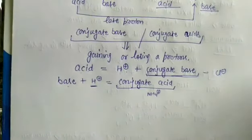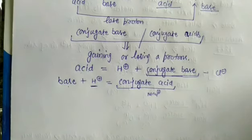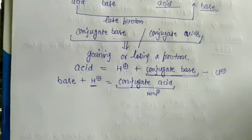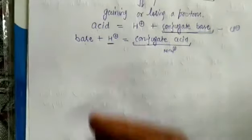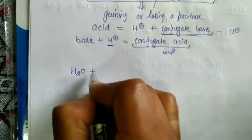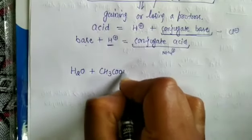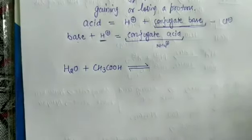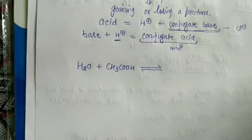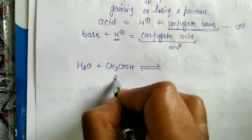In the Bronsted-Lowry concept, whenever an acid and base react, two conjugate acid-base pairs are formed — one original acid with its conjugate base, and one original base with its conjugate acid. Let us take an example: water reacting with a general acid. We need to identify which species behaves as acid and which as base in this reaction.